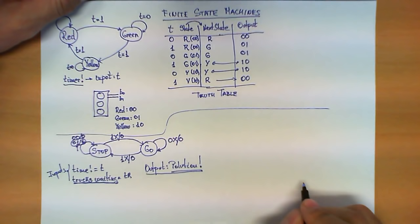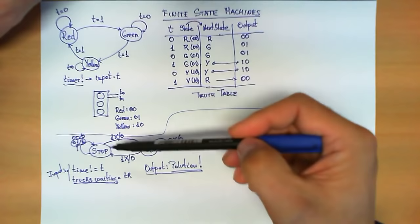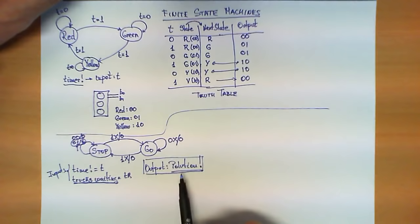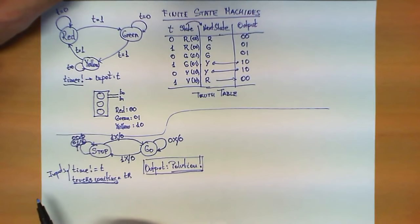If you look at it carefully, there is a very significant difference between these two machines, because now the output that I am interested in is not attached to the state as it was in the first example — where the state was controlling the traffic light — but here the output depends not only on the state but also on the value of the input.